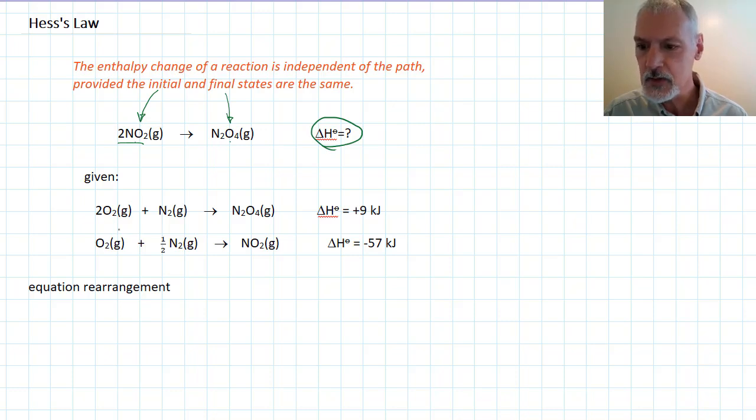So I'm going to use these equations down below to do that by a technique called equation rearrangement. Let's start here with my initial state. As I scan these two equations down below, I notice the presence of nitrogen dioxide in this equation.